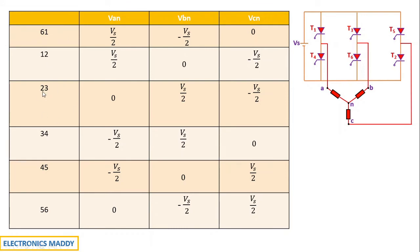For 2-3 conducting: thyristor 2 connects phase C to the negative terminal, so Vcn = -Vs/2. Thyristor 3 connects phase B to the positive terminal, so Vbn = Vs/2. Since neither thyristor for phase A is conducting, Van = 0.